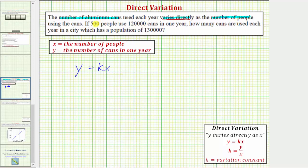Looking at the next sentence, we're told 500 people use 120,000 cans in one year, which means when x equals 500, we know that y must equal 120,000. This given information allows us to find the variation constant, so we can substitute these values into the equation and solve for k, or we could use this equation here, k equals y divided by x.